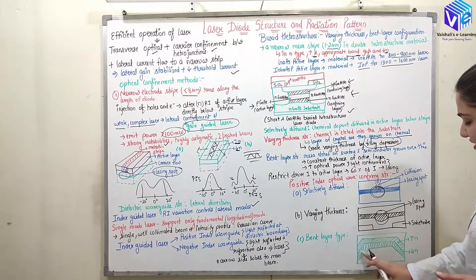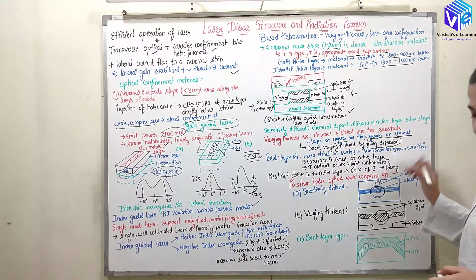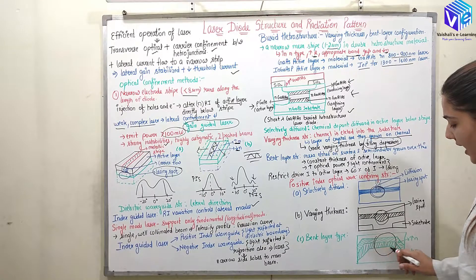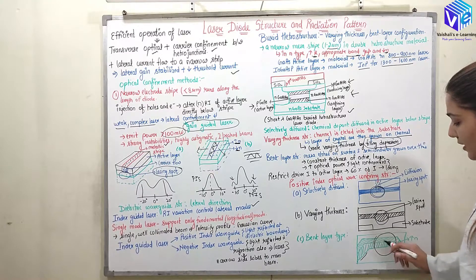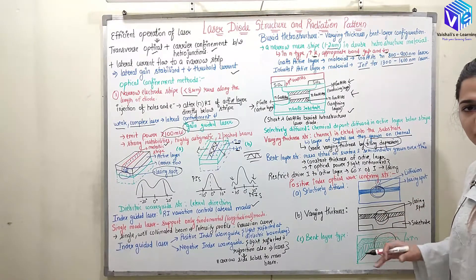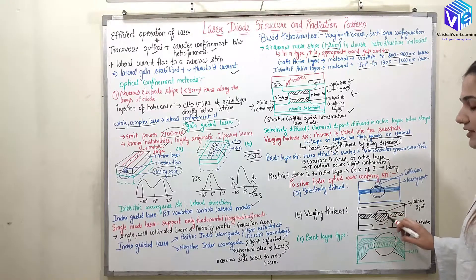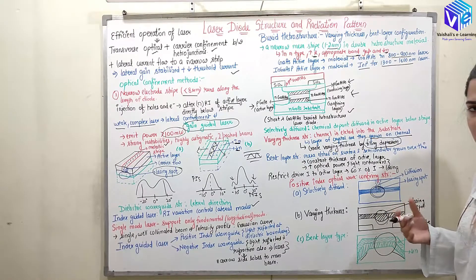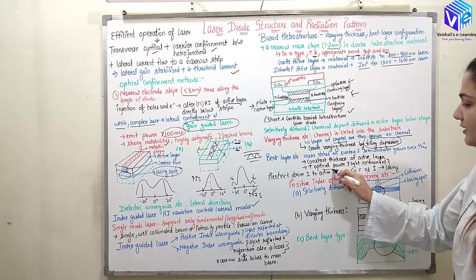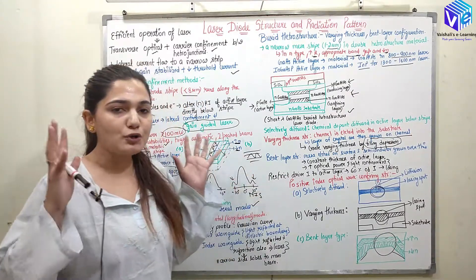In the bent layer structure we have two refractive index materials. A mesa is etched on the surface and semiconductor is grown over it. The mesa is a low refractive index surface — a terrace kind of structure. The lasing spot is present where the height is continuous for this mesa spot. When I deposit semiconductor material over the mesa I have constant thickness of the active layer throughout, giving increased output power because the light is confined more in this case. This is the best case among the four.